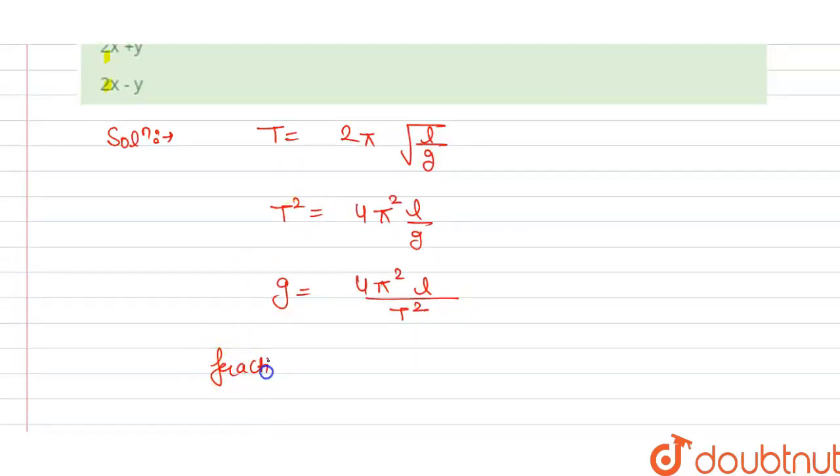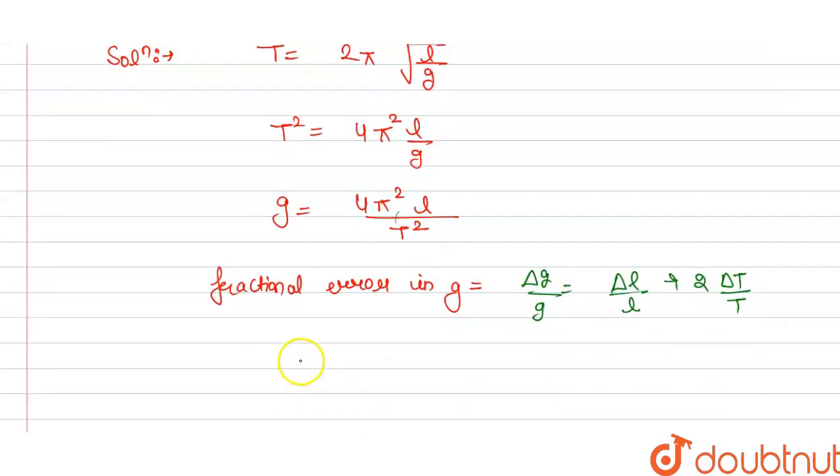Fractional error in G is equal to ΔG/G = ΔL/L, as 4π is constant, plus 2 times the time period ΔT/T.